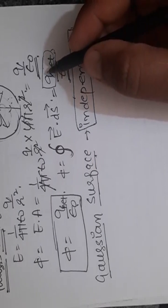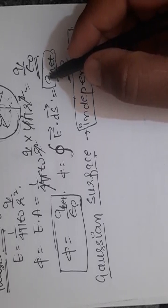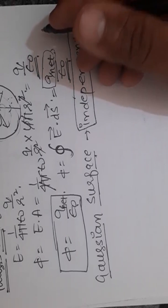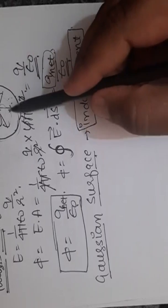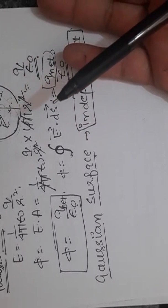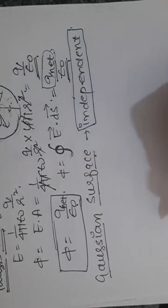My electric flux is independent of Gaussian surface. Whatever the size of that closed surface, it doesn't matter. If the area of Gaussian surface becomes double, what will be change in electric flux? It will remain same as it is independent of Gaussian surface.